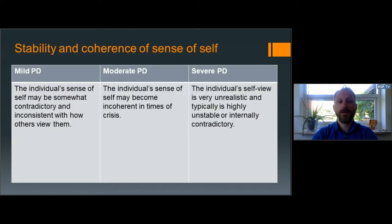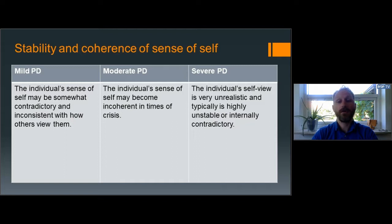In terms of stability and coherence of one's sense of identity, mild personality disorder may involve that the individual has a somewhat contradictory sense of self — for example, the extent to which identity or sense of self is variable and inconsistent, or overly rigid and fixed. In contrast, severe personality disorder often involves an unrealistic or highly unstable sense of self or self-view.